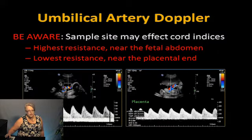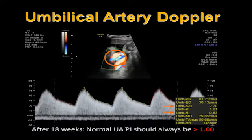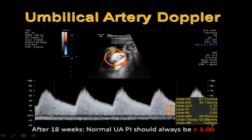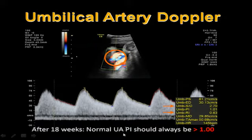Sample site may affect cord indices — higher resistance near the fetal abdomen, lower resistance near the placenta — so make sure you're doing mid-cord and try to do at least 2 to 3 to get an average. Looking at a nice tracing with adjusted sweep speed and scale: the S/D ratio was 2.7, pulsatility index 1.0. After 18 weeks, the normal umbilical artery PI should always be greater than 1.